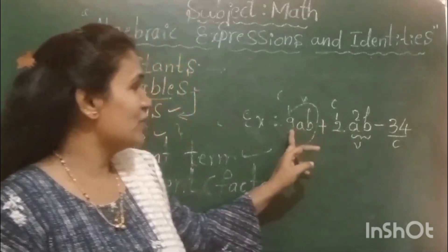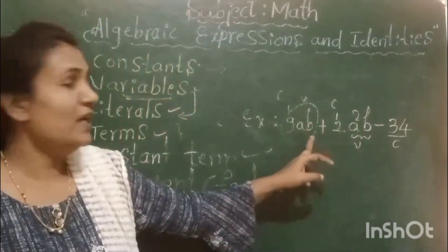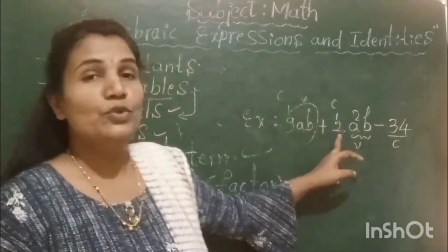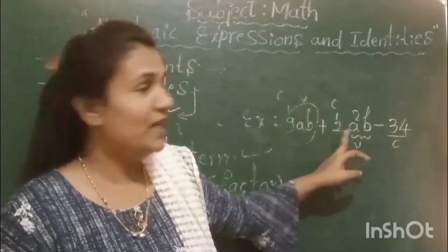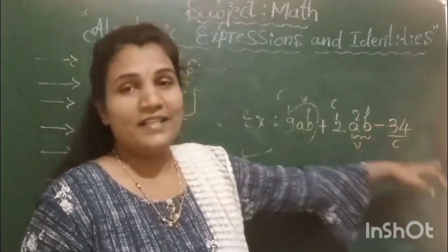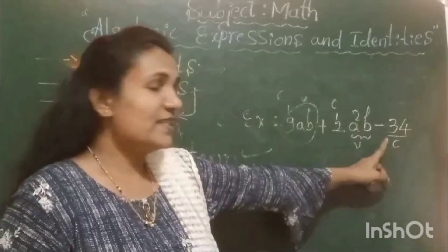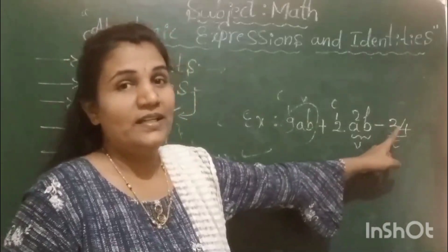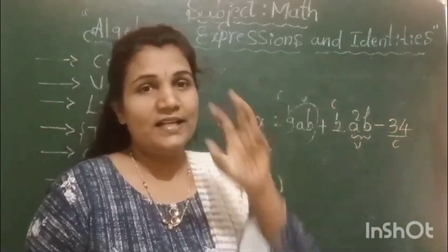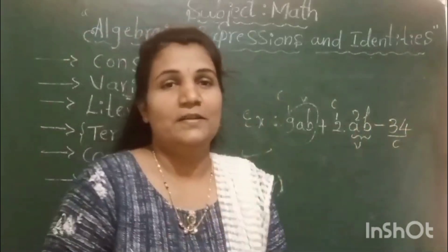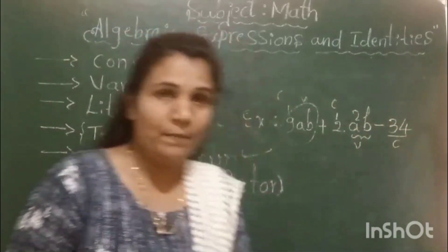In this algebraic expression 9ab + 2a²b − 34, the term −34, where 34 is the constant term.